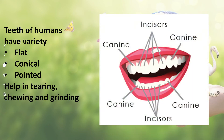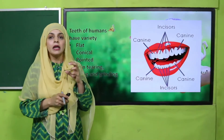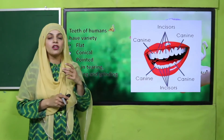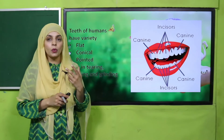Humans have multiple types of teeth: incisors, canines, molars, and premolars. Hamare mooh mein mukhtalif teeth hain jo variety of functions perform karne mein help karte hain — gripping, tearing, chewing, and swallowing mein yeh hume help karte hain.